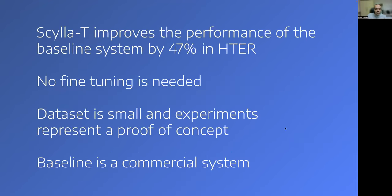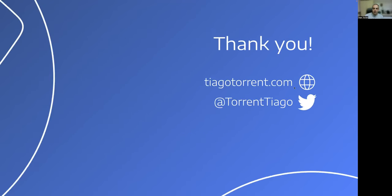As for the conclusions and limitations of this work: SILA-T improves the performance of the baseline system by 47% in HTR when measured by professional human translators, and no fine-tuning is needed for the model, representing much less computational effort for providing better translations. Important limitations include that the dataset is very small and represents a proof-of-concept, and the baseline is a commercial system, so we have no means of knowing the details of how it was trained or what percentage of in-domain corpora was used. Nonetheless, this is the first experiment to use a qualia-enriched FrameNet for domain adaptation in machine translation. Thank you so much for your attention.